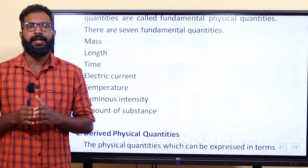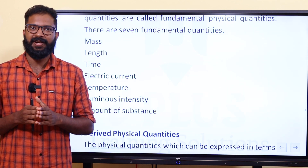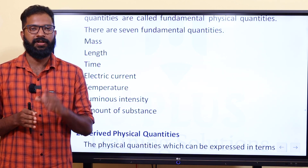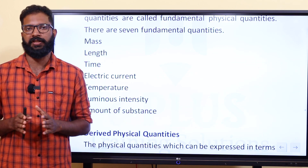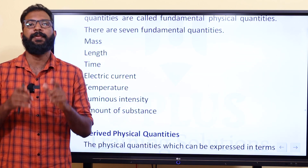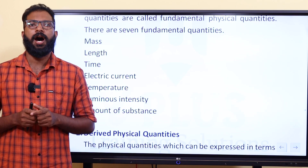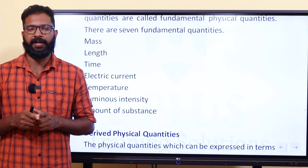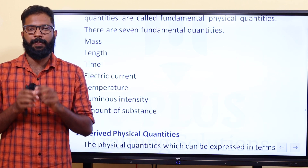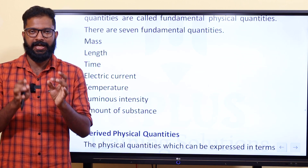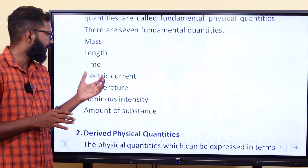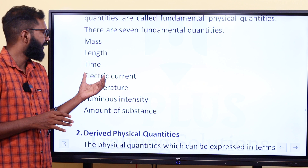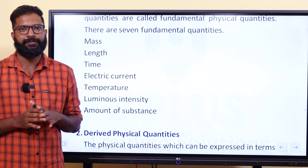The seven fundamental physical quantities are: number one is mass, number two is length, number three is time, and number four is electric current.